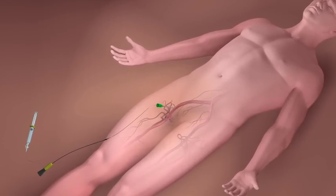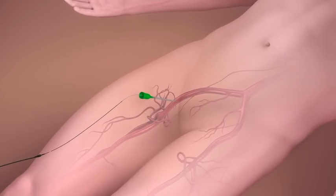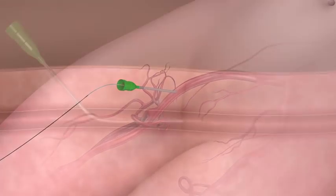The MinxGrip sealant is delivered through the existing procedural sheath, eliminating vessel trauma that is often caused by sheath exchange and tissue tract expansion.